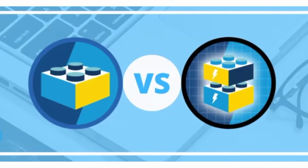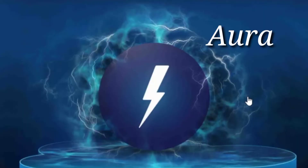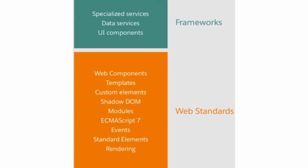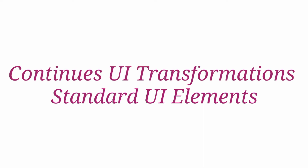Coming to the differences between Aura and Lightning Web Components: Lightning Web Component was created to overcome the shortcomings of Aura. Without web standards, developers had to use many different things — like a rendering engine, standard elements, core language, and events — to build a complete large-scale application. One shortcoming of traditional Aura was continuous UI transformations; rendering needed to be optimized, which was not the case with the older Lightning Component.